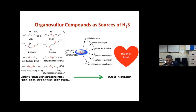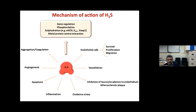H₂S can prevent oxidative stress by scavenging reactive oxygen species; it is anti-inflammatory; it acts as an antioxidant molecule; it dilates blood vessels; it influences endothelial cell survival, proliferation, and migration; and plays a role in response to injury. It also modulates aggregation and coagulation — relevant to clotting — and influences angiogenesis, the formation of new blood vessels.